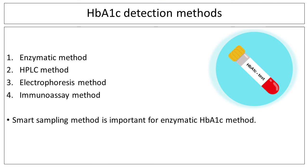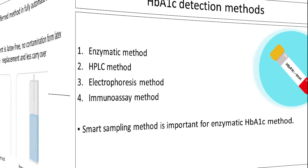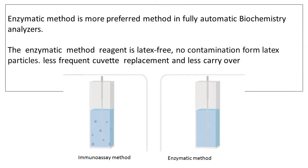There are several methods to detect HbA1c tests in clinical biochemistry labs: enzymatic method, HPLC method, electrophoresis method, and immunoassay method. Among these methods, the smart sampling method is important for the enzymatic HbA1c method. The enzymatic method is the more preferred method in fully automatic biochemistry analyzers. Its reagent is latex-free, meaning no contamination from latex particles.